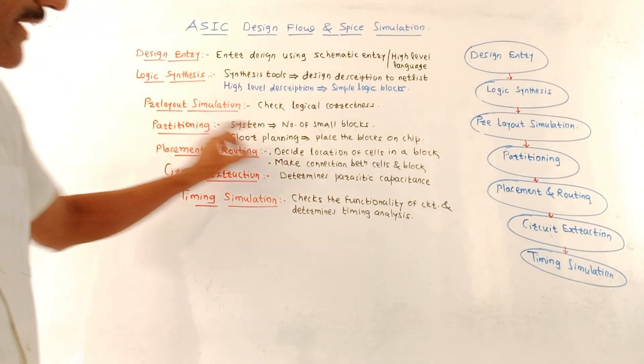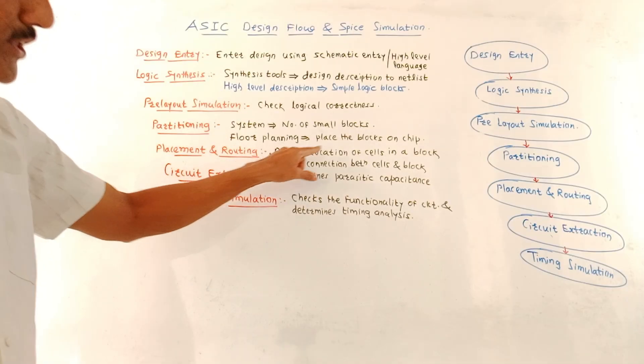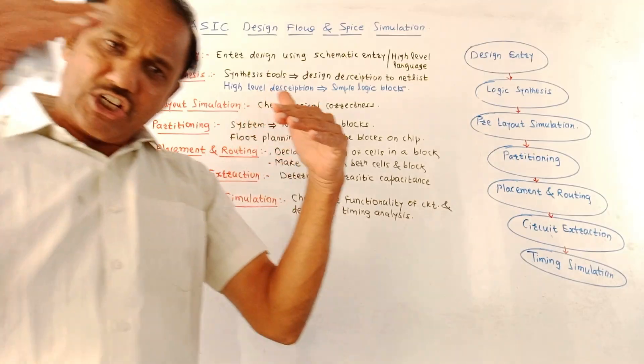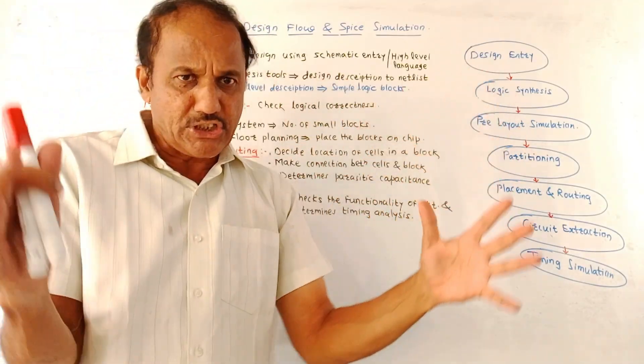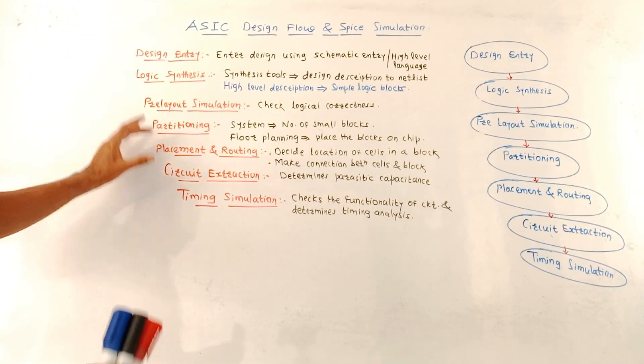Then placement and routing. I am talking about this block. This step decides the location of cells in a block as well as it makes connection between cells and blocks, and care is taken that the interconnection should be as minimum as possible.